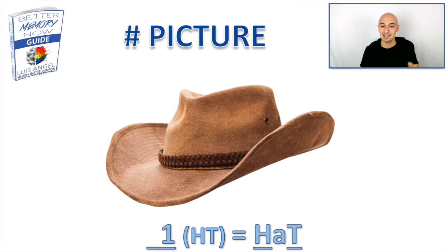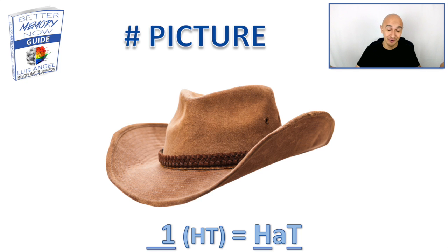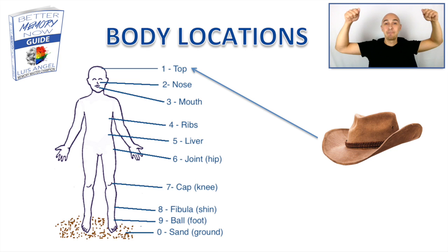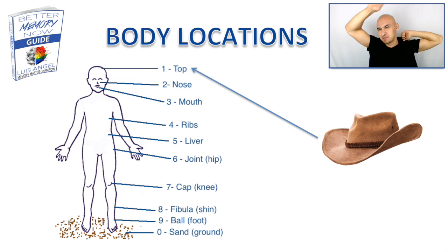The picture for number one is hats. The consonant sound for number one is a T, D, or TH sound — we'll stick with the T sound. You throw in an H at the beginning and a vowel or two, and you get hats to represent one. Picture that on top of your head — maybe you're inverting the hat inside out and spinning it on top of your head.